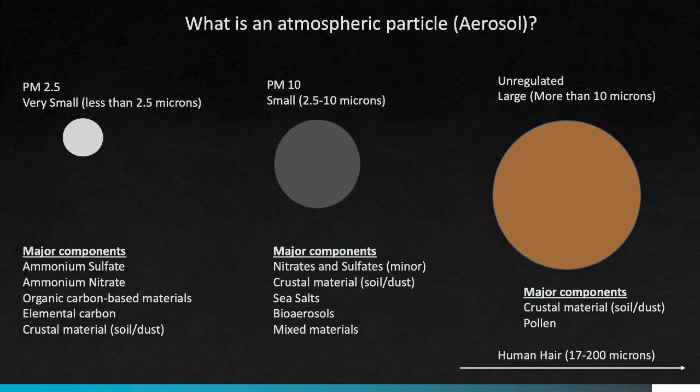PM2.5 and PM10 are the regulated particle categories in the United States and most other countries with air quality regulations. There are also unregulated particles in the atmosphere that are larger and include things like blowing dust or pollens. For reference, a human hair has a diameter of somewhere between 17 and 200 microns, so that should give you a sense of how small some of these particles are.